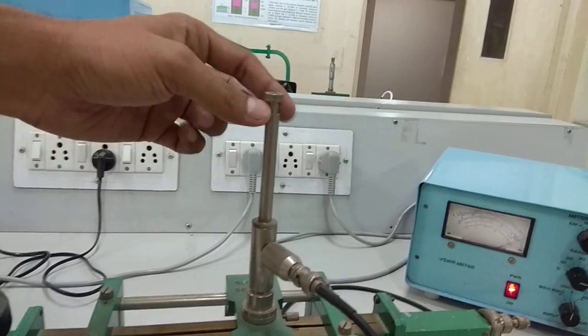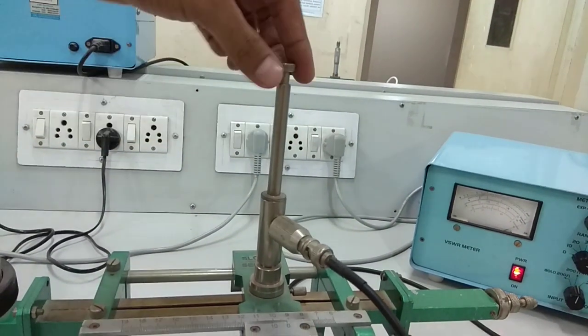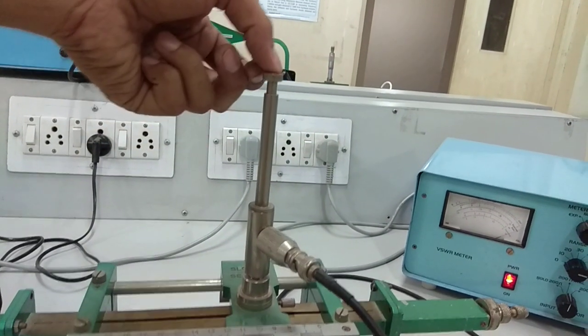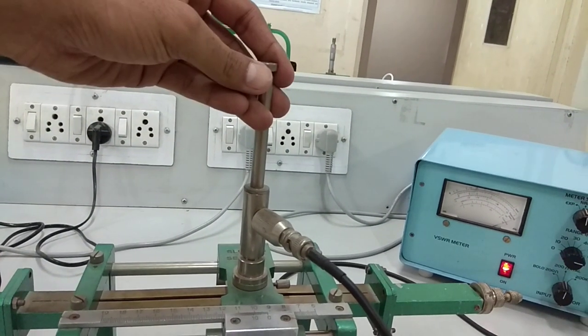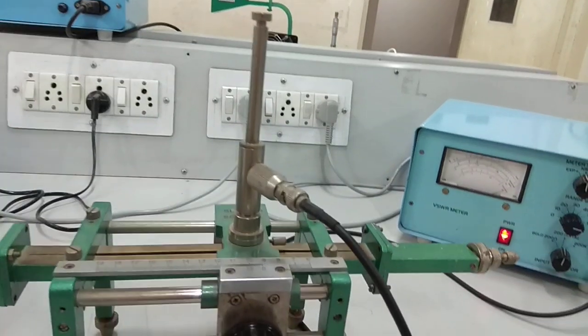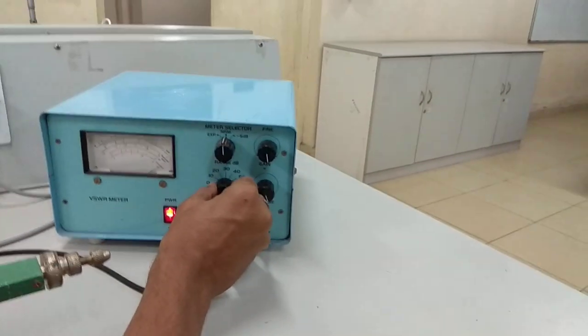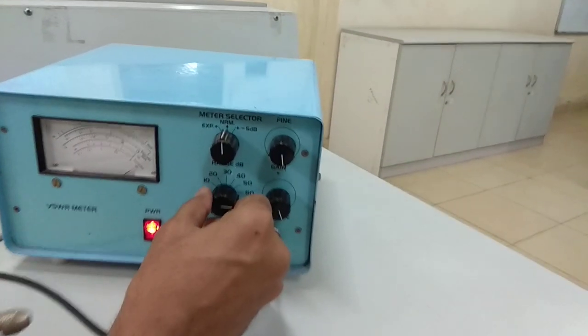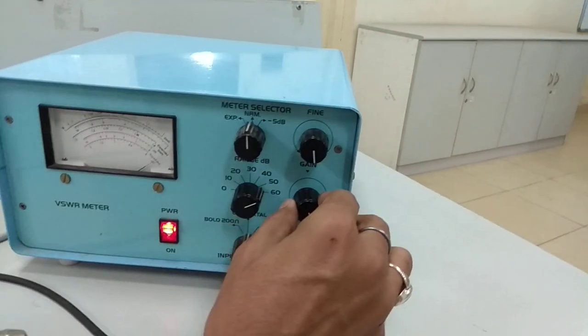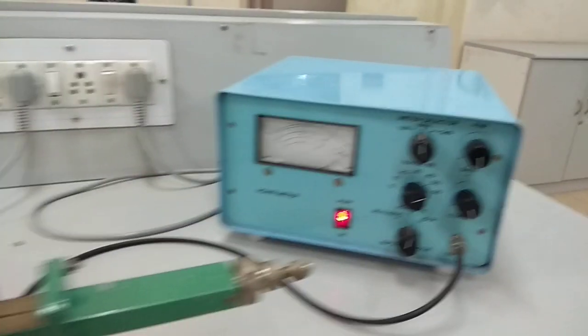When we see the slotted line section, there is this plunger. It should be fully inside, kept fully inside to detect the electromagnetic signal. And then we can see here. We have to... Let's see, we can start.